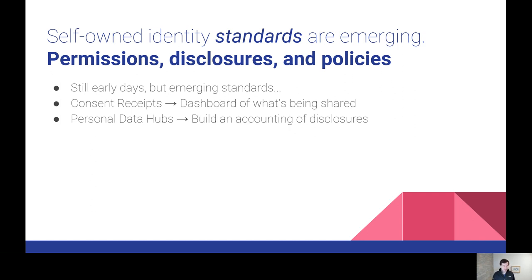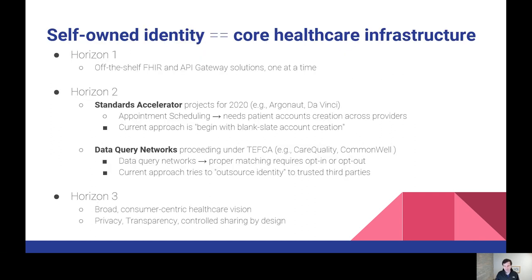Consent receipts and data hubs are examples of specifications in the decentralized identity space that are early but very promising. Together, this set of technologies starts to address those core challenges. On the roadmap, horizon one is really just deploying off-the-shelf tools in healthcare that are available from service providers today — things like Azure Active Directory, FHIR servers, and API gateways that implement best practices as they exist in 2020. But thinking ahead, especially in the healthcare standards accelerator world, we've got a number of projects that simply leave identity out of scope, and there's a really nice opportunity to develop these specifications in tandem.